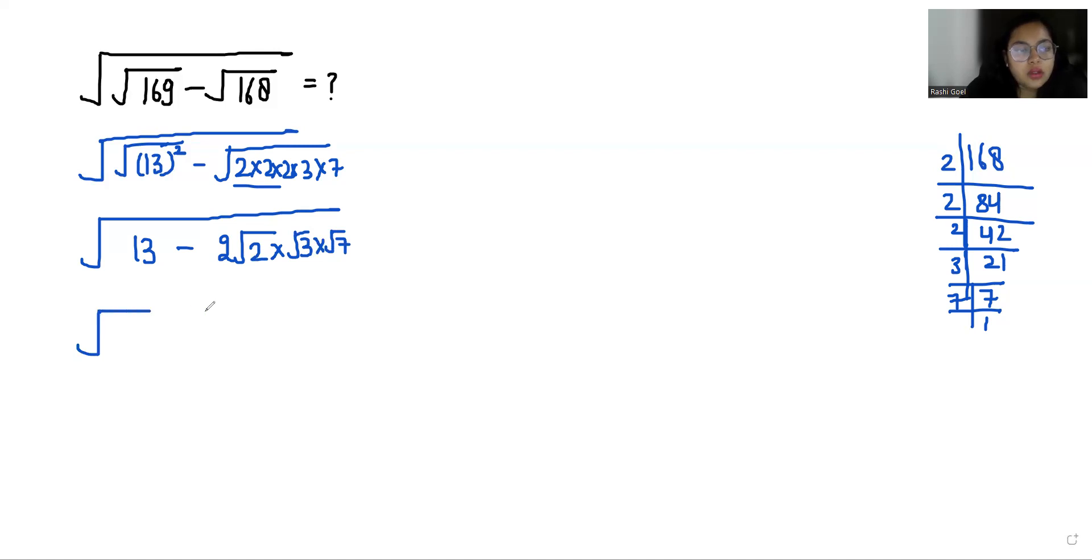Now 13 we can write it as 6 plus 7 minus 2 square root 6, 2 times 3 square root 7.